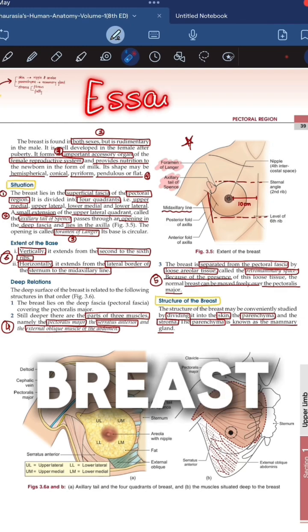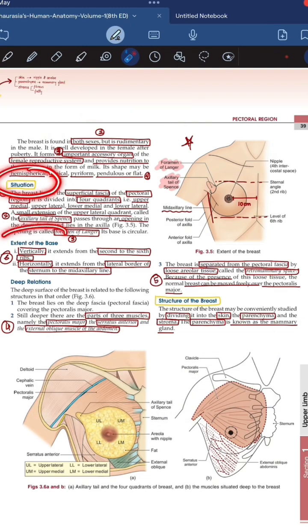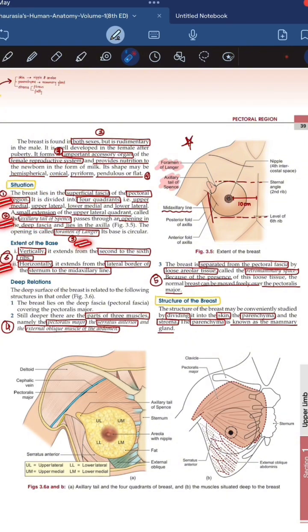Now giving an example of breast, which is an important essay question, here the situation, extent, and deep relations are the headings inside which you can put pointers.